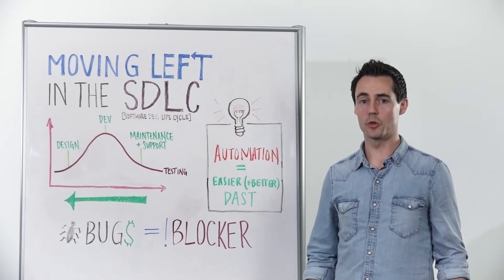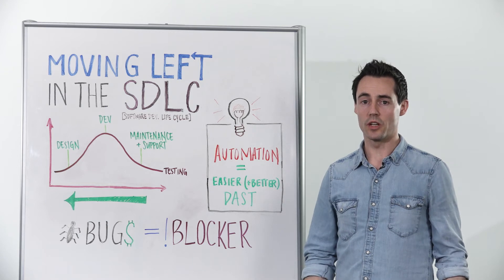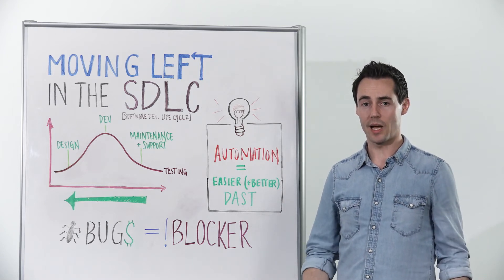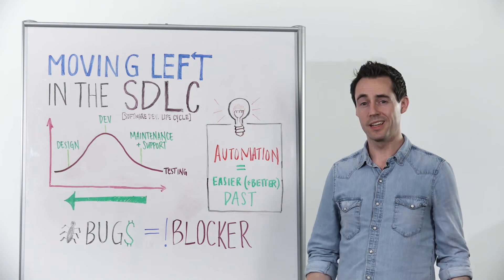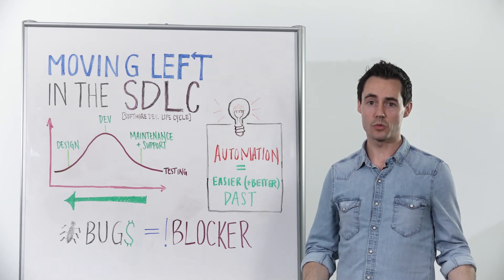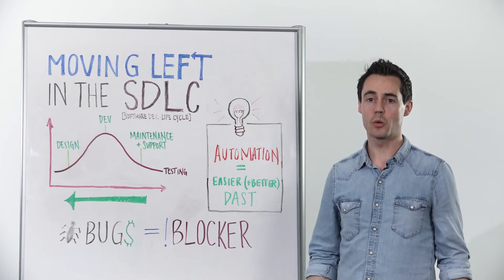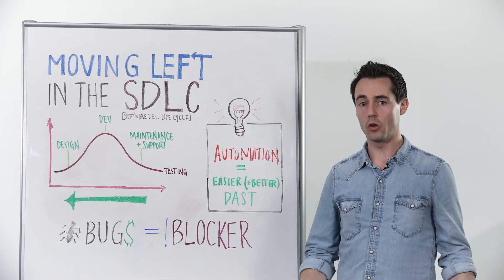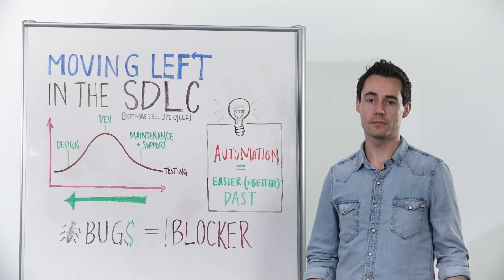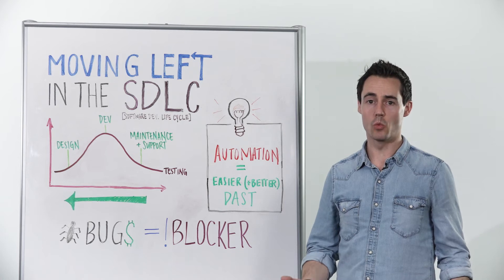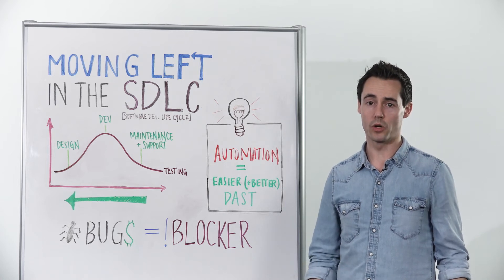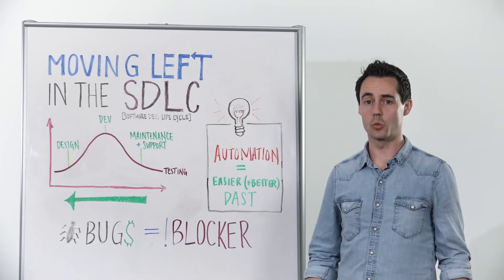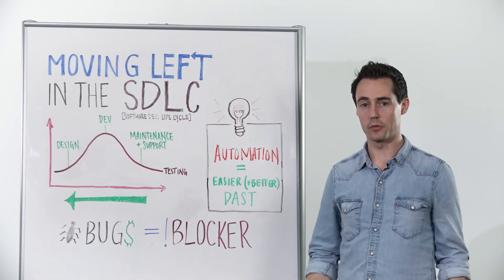Often, application vulnerability assessments are done as part of a final check before deploying apps into the public domain. This can create a bottleneck of bugs which all need to be investigated, prioritized, and potentially fixed, all of which can delay a release. Any piece of software which has more code than a simple Hello World program has bugs, and it doesn't make sense to wait until the 11th hour to start looking for them.